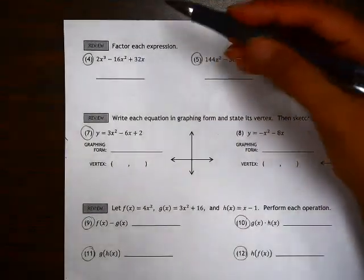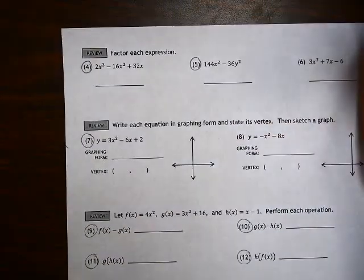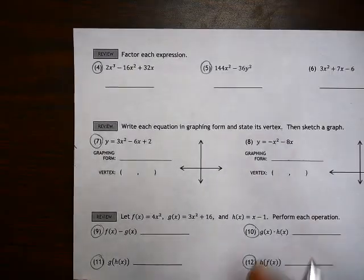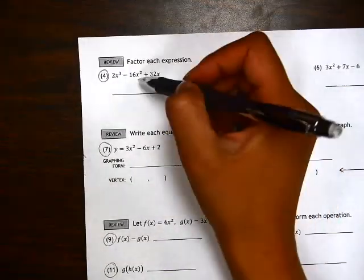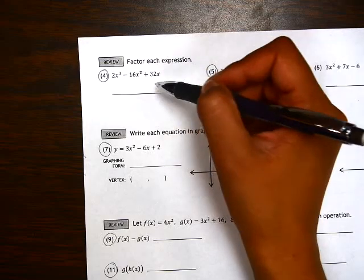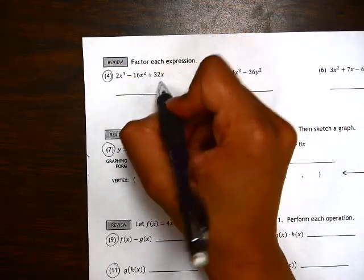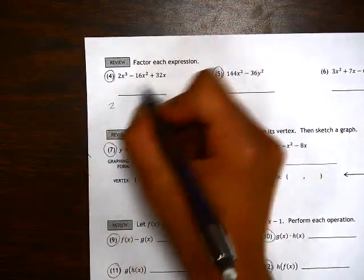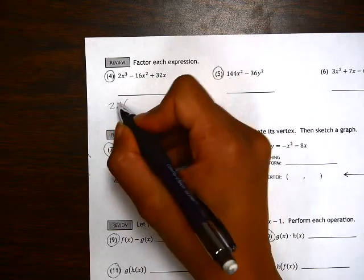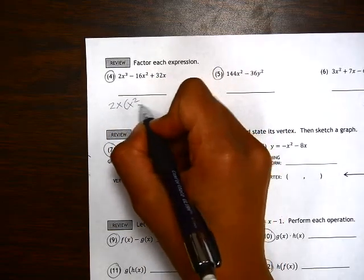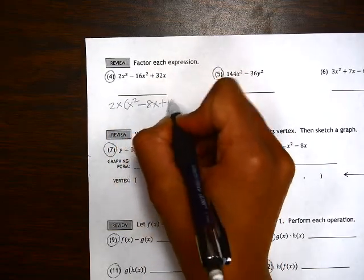This is worksheet 9.3 and we're looking at numbers 4 and 5 which ask us to factor each expression. So looking at number 4, always first look to see if there's anything common that we can factor out. The GCF here is 2 and x. We're left with x squared minus 8x plus 16.